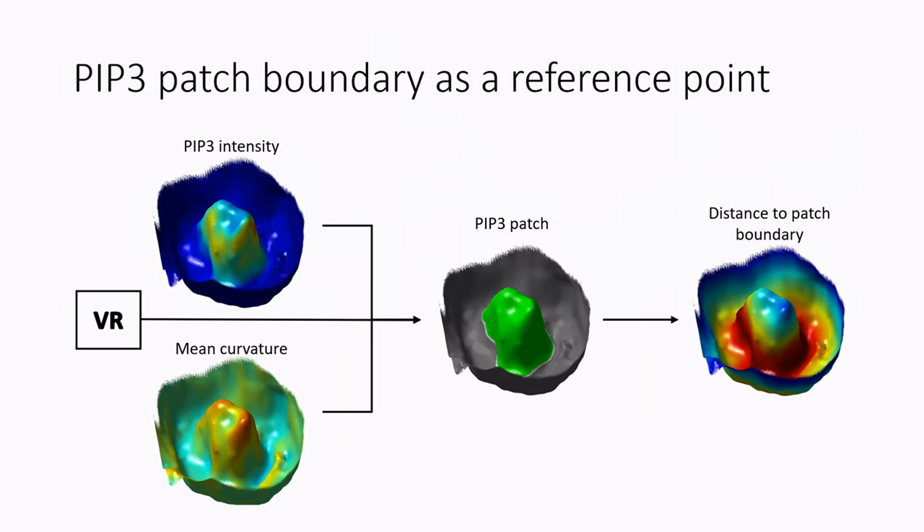Back to macropinocytosis. And here we see, this is where we use the VR input to select the individual PIP3 patches, which is a site where we get these cups forming. And we actually just use a simple threshold on the PIP3 intensity to segment the patch itself, but we use mean curvature to guide the segmentation of the patch itself. And as I say, we're interested in the values relative to the boundary of the PIP3 patch.